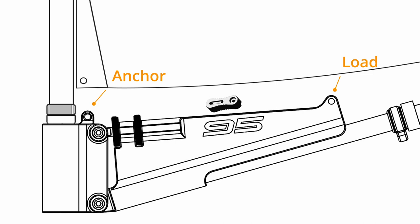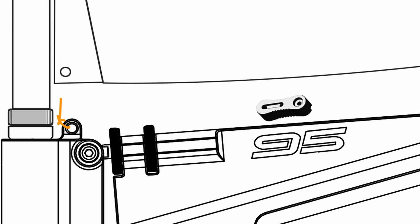Always start at the anchor side. This is where the Dyneema will have been secured to the boat or part of the rigging.